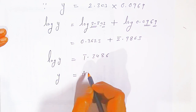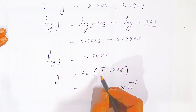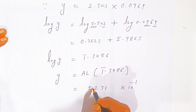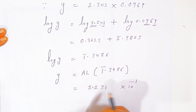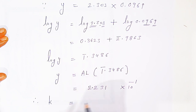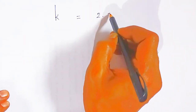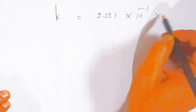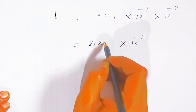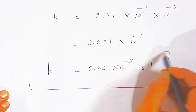Since log y = 1̄.3486, we take antilog: antilog of 1̄ is 10⁻¹, and antilog of 0.3486 from the antilog table gives 2.231. So y = 2.231 × 10⁻¹. Therefore k = y × 10⁻² = 2.231 × 10⁻¹ × 10⁻² = 2.231 × 10⁻³. The rate constant is k ≈ 2.23 × 10⁻³ s⁻¹, which is the rate constant for this first order reaction.